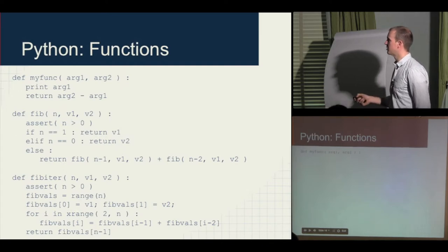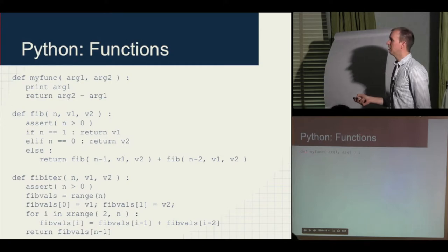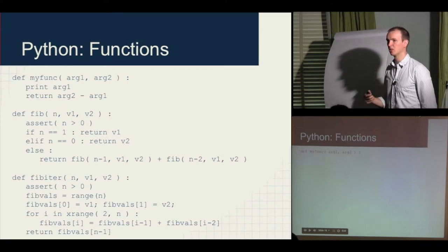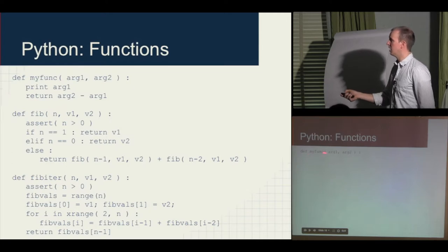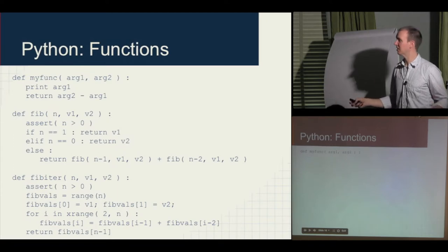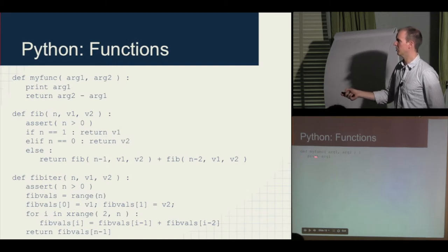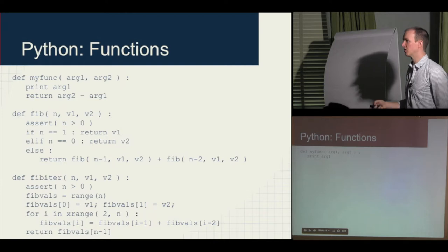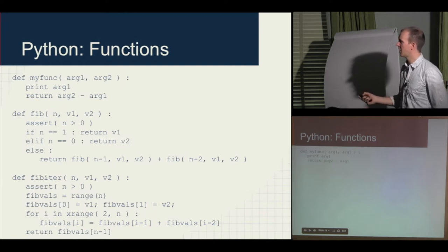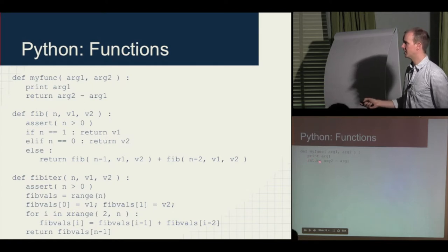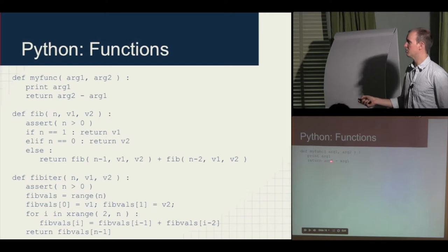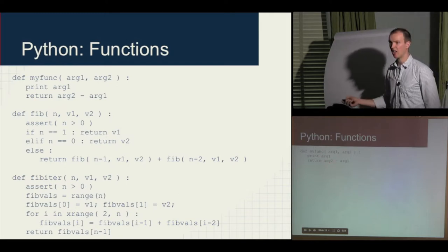The syntax for declaring a function: you don't give a return type like in C++. Instead you just say 'def my_function(arg1, arg2):' — you don't declare argument types either. Then you start indenting. For example: print arg1 on the first line, return arg2 - arg1 on the second line. That's your function.